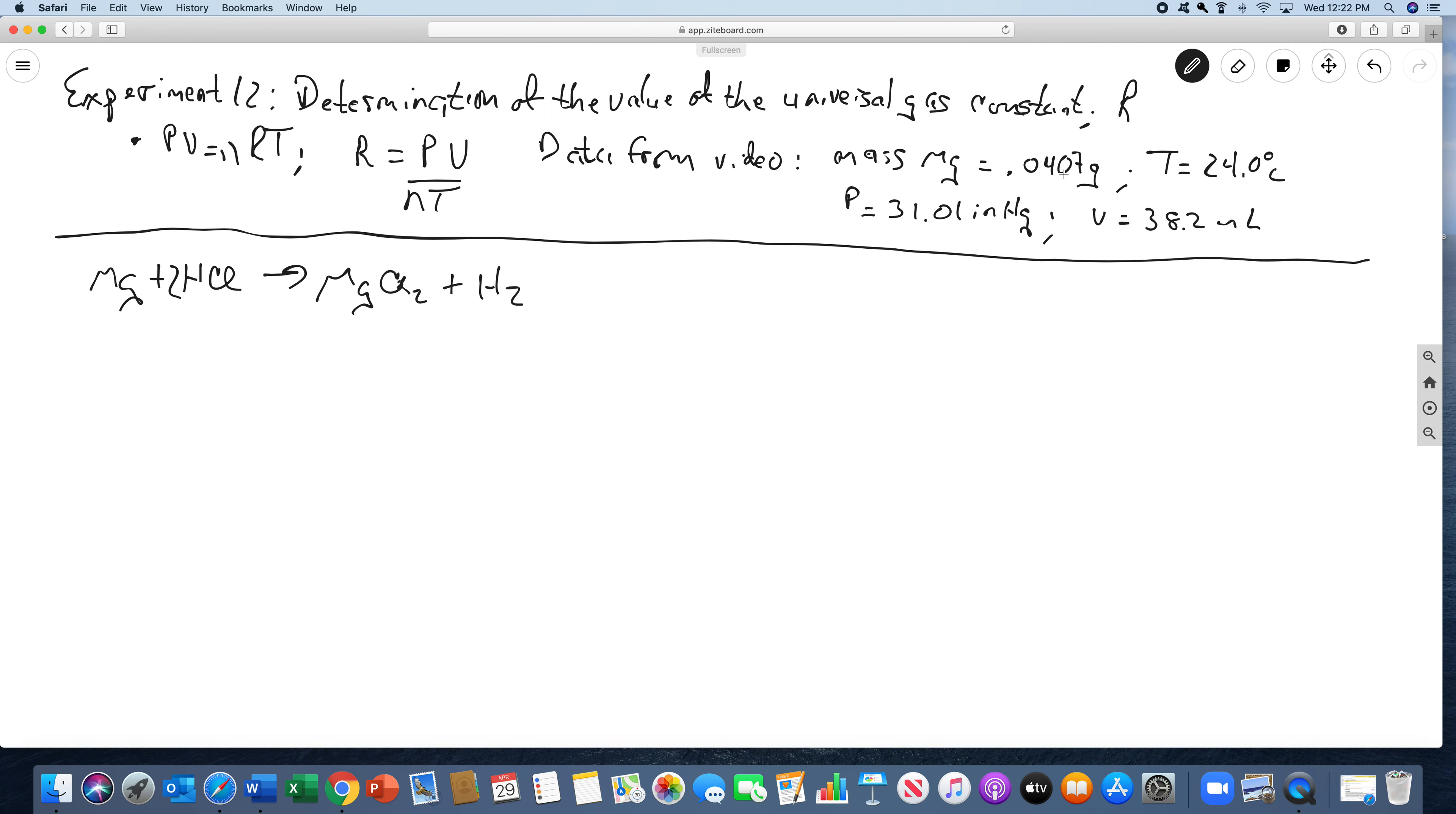we have the data from the video, and we demonstrated how it's done. So this is the mass of the magnesium. The temperature of the water was 24 degrees Celsius. The pressure in the room was 31.01 inches of mercury, and the volume of hydrogen gas we collected was 38.2 milliliters.